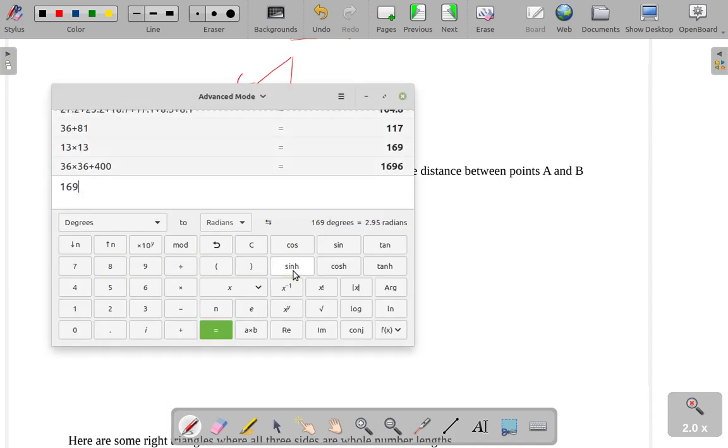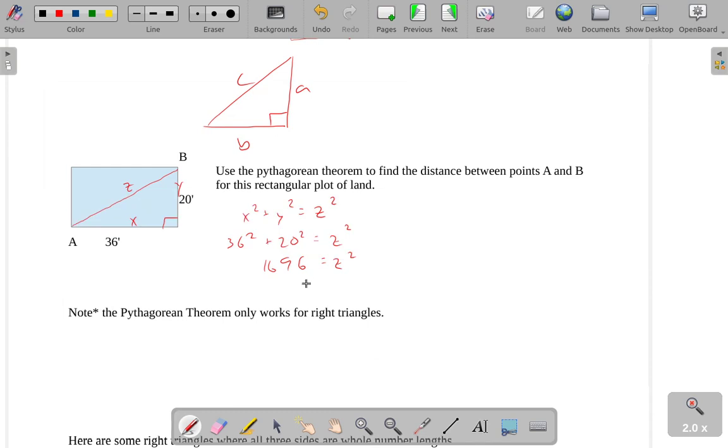So what number when squared gives us 1696? Well, if you recall, we actually have this nice little thing called the square root. The square root tells us what number squared gives us something. So the square root of 1696, or 41.18 approximately.